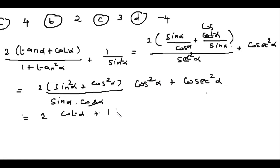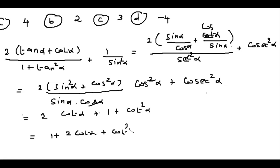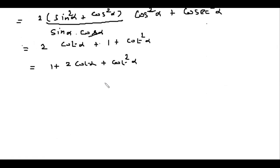Now we have 2 cot α plus cosecant²α, and we know that cosecant²α = 1 + cot²α. So the expression becomes 1 plus 2 cot α plus cot²α. This is the format, which equals (1 + cot α) whole squared.